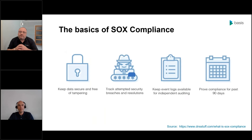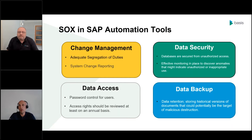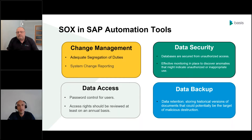What does SOX compliance actually mean for SAP customers, especially those using some sort of automation tooling? SOX compliance really splits into four main areas: change management, data access, data security, and data backup. On the screen there are some of the aspects that SAP customers using automation tools really need to be considering, to make sure their tooling is compliant with the SOX guidelines. From the delivery of SAP change using automation tools, a couple of the key ones are going to be segregation of duties and the reporting of changes being made to the systems themselves.